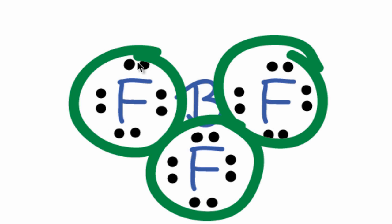So we've used all twenty-four valence electrons, and we can see that each of the fluorines has an octet. It has eight valence electrons, but the boron in the center only has six valence electrons.